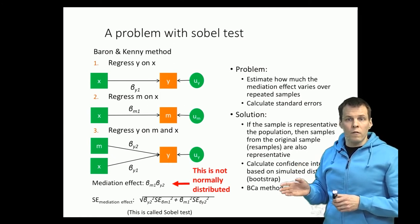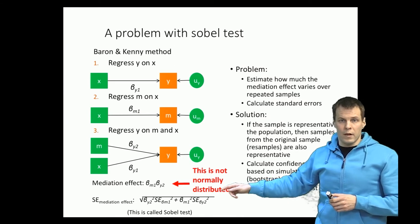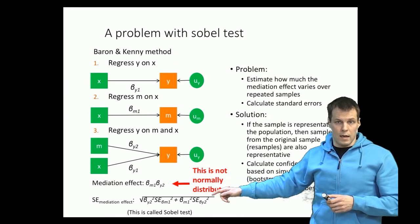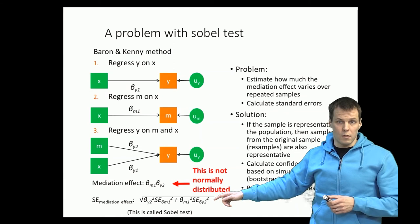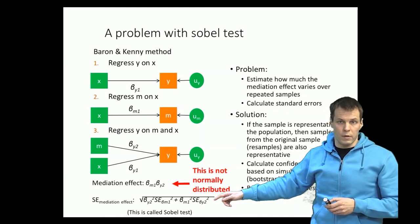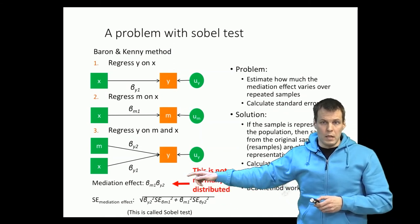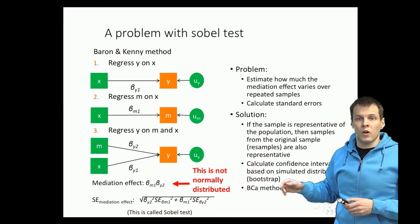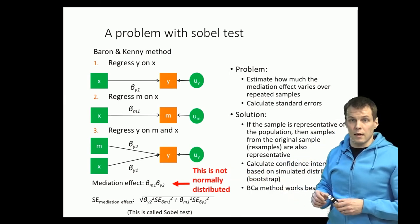That doesn't solve the problem that the ratio of mediation effect and its standard error is not distributed as t as it's supposed to be because this is a product. Then instead of calculating the t statistic and the p value, we calculate confidence intervals based on bootstrapping.